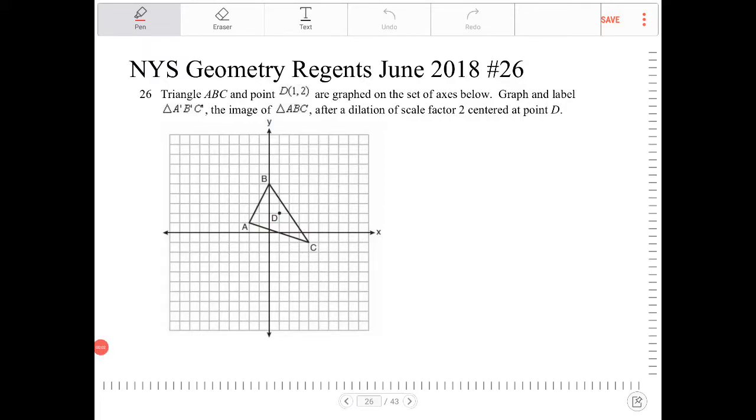Triangle ABC and point D are graphed on the set of axes below. Graph and label A'B'C', the image of triangle ABC after a dilation of scale factor 2 centered at point D.